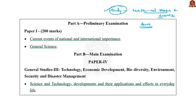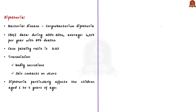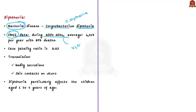Today's article focuses on the pattern of diphtheria. It is a bacterial disease caused by a bacterium called Corynebacterium diphtheriae, commonly called C. diphtheriae. According to data from the Central Bureau of Health Intelligence, Ministry of Health and Family Welfare, during 2005 to 2014, India reported 41,000 cases with around 897 deaths, averaging 4,167 cases per year with a case fatality ratio of 2.2 percent.